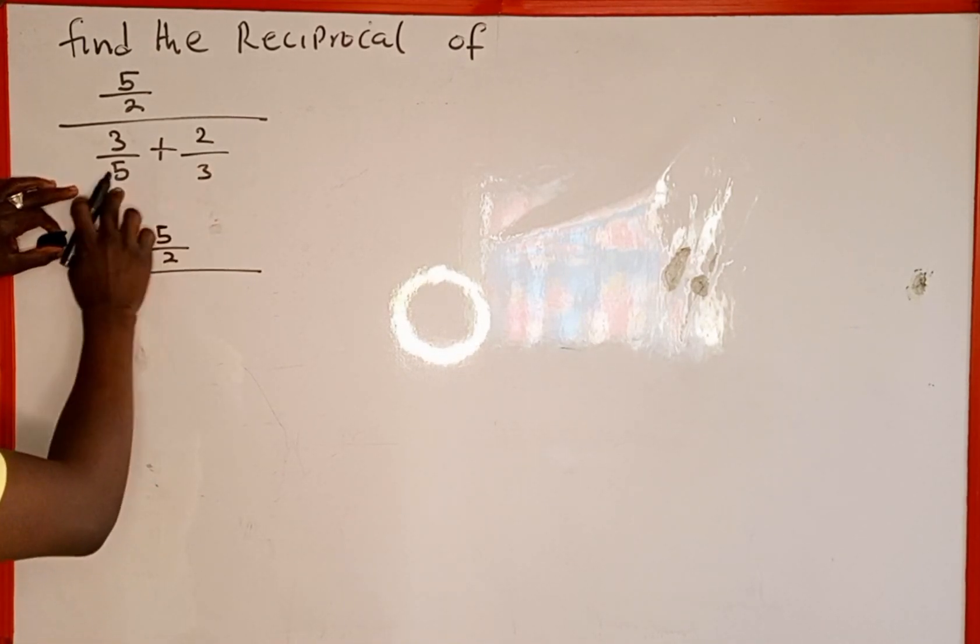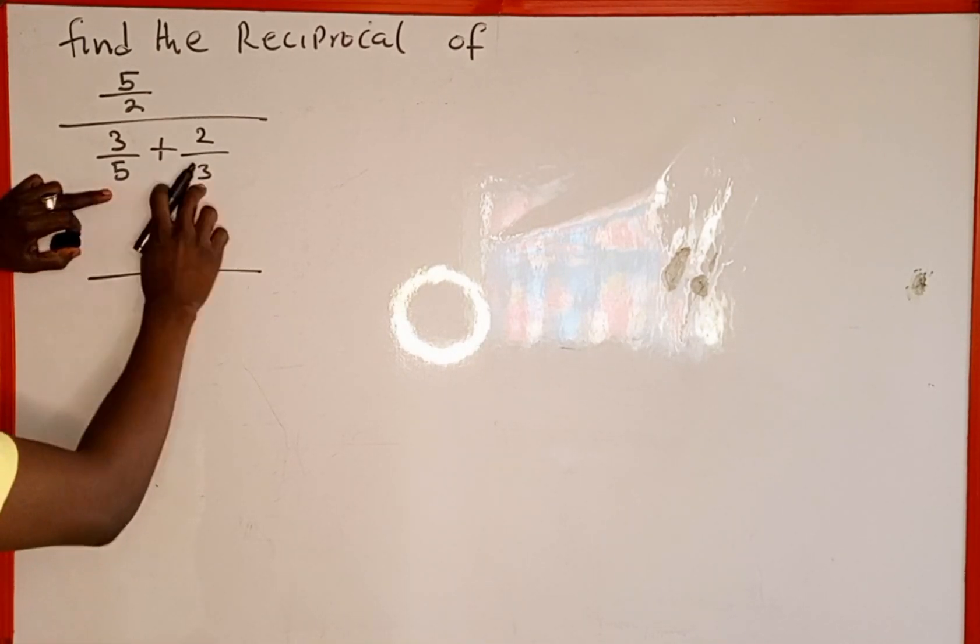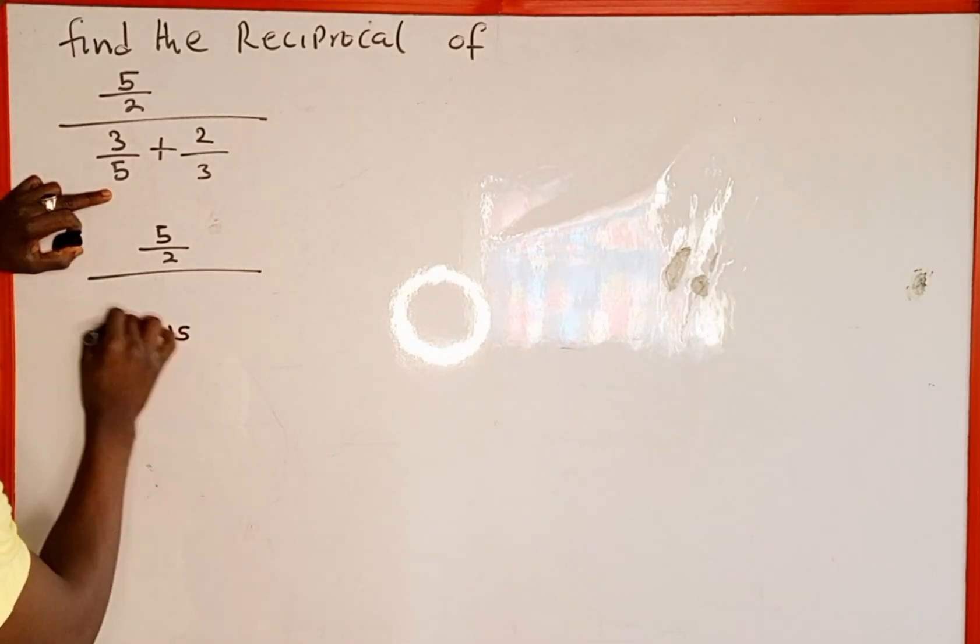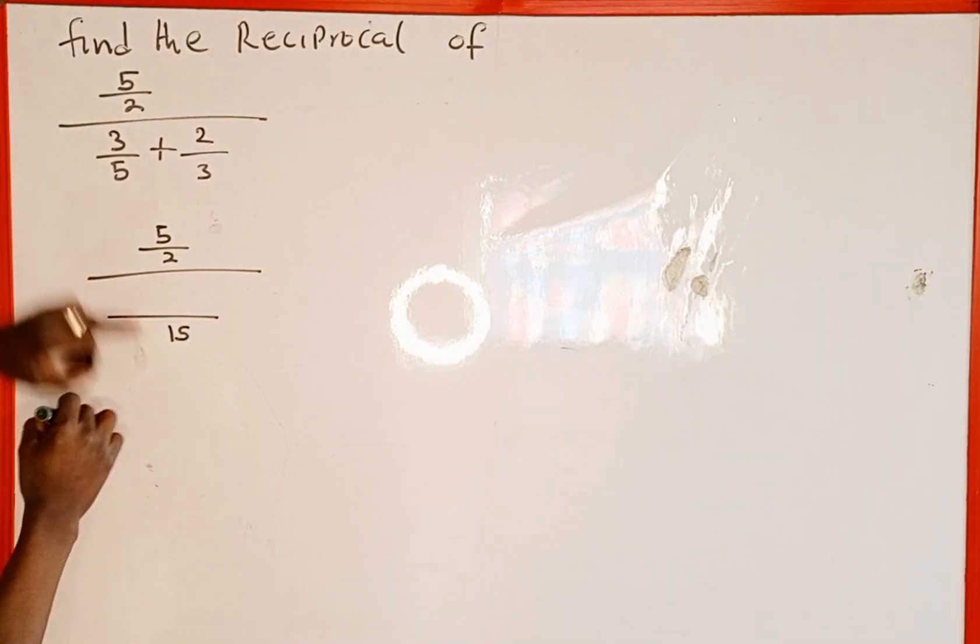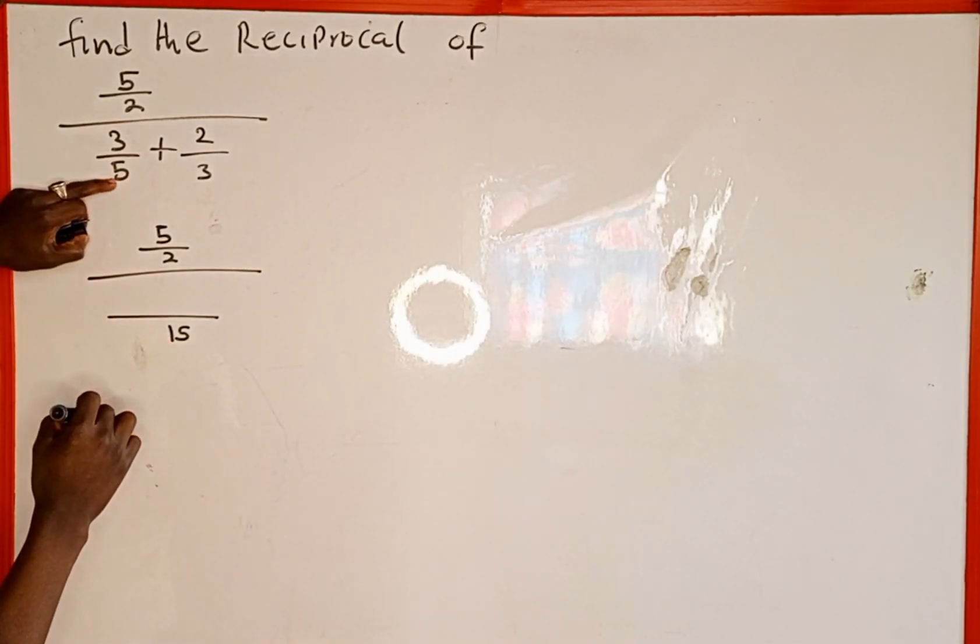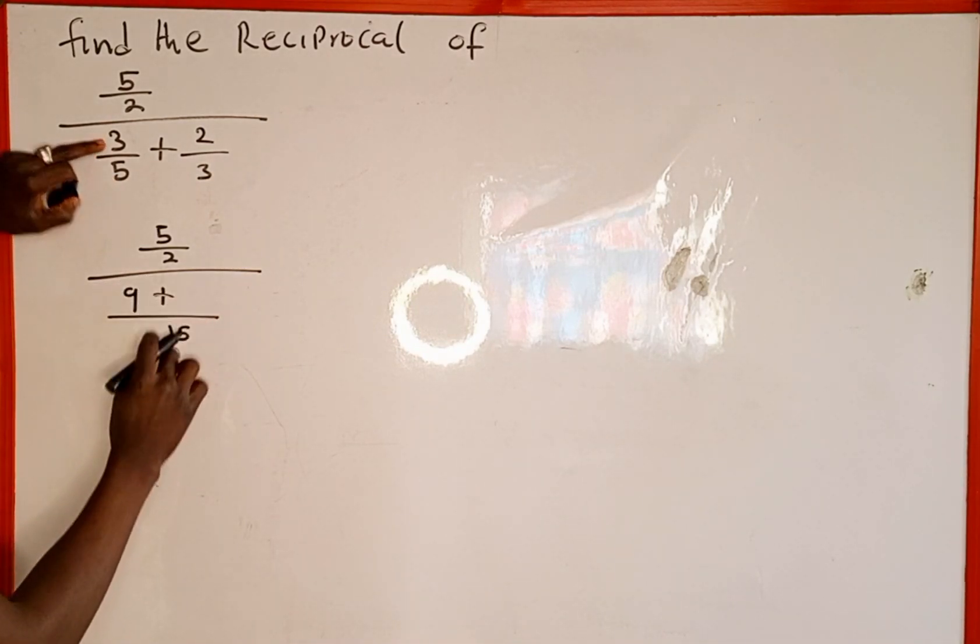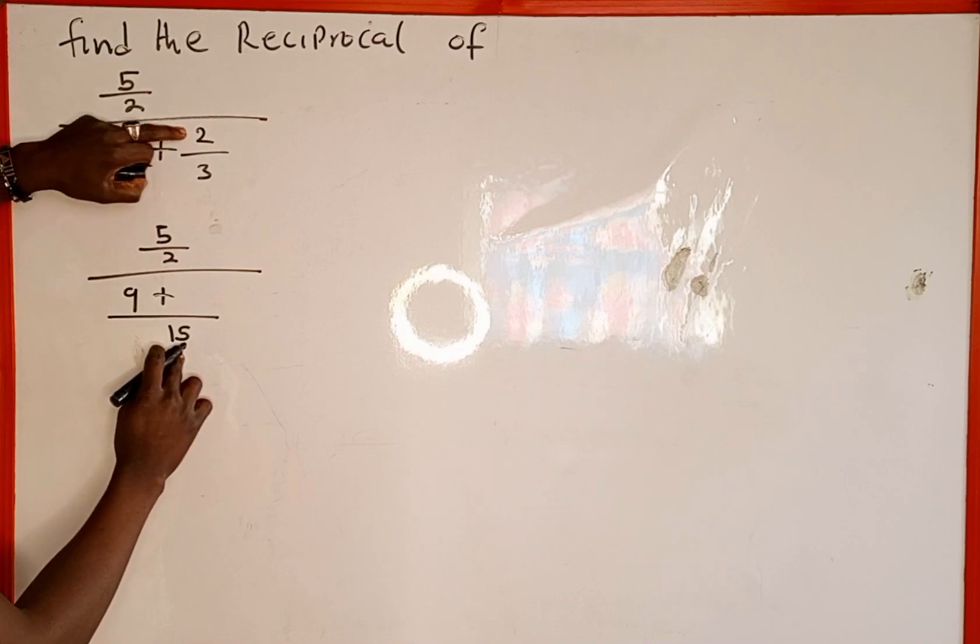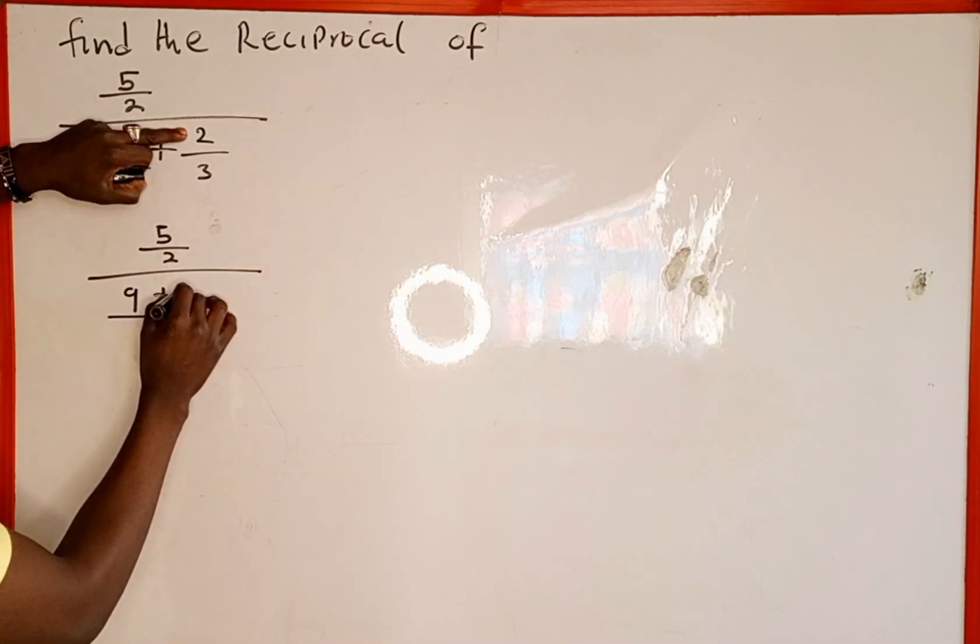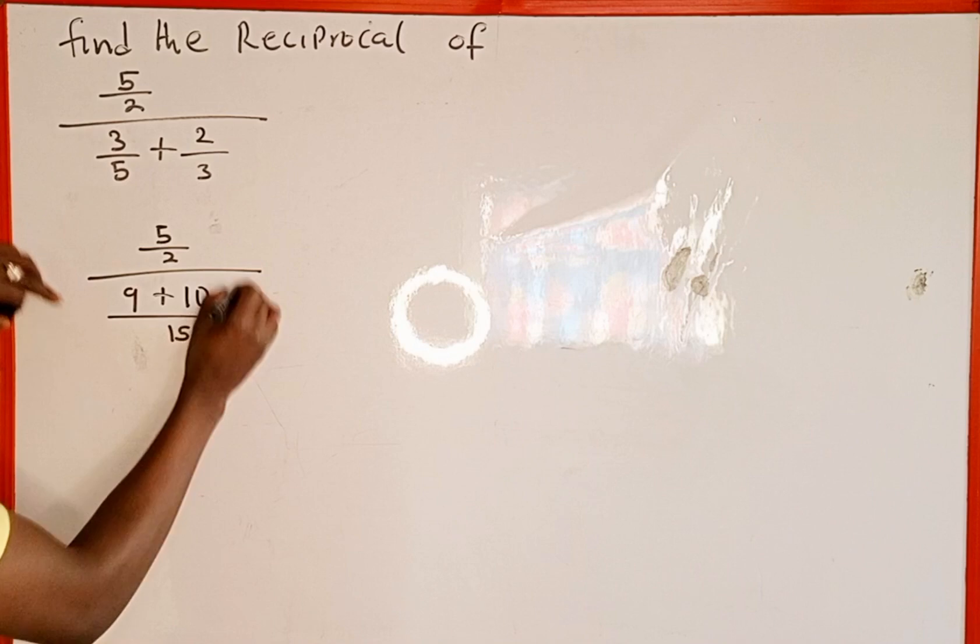We find the LCM. The LCM of 5 and 3 is 15, then we draw a division line. 15 divided by 5 is 3, then 3 multiplied by 3 is going to give us 9. Then plus, 15 divided by 3 is 5, then 5 multiplied by 2 is going to give us 10.